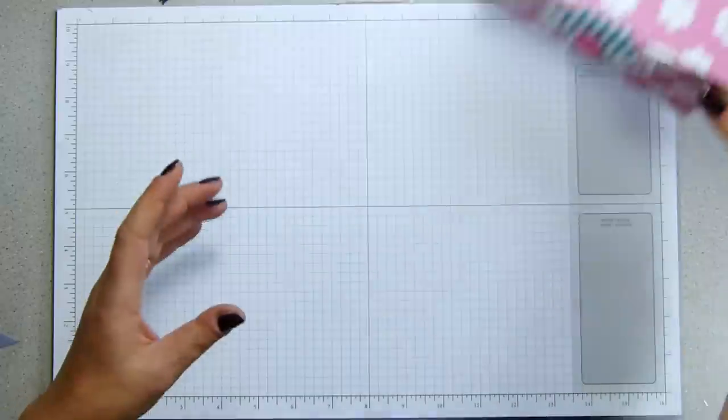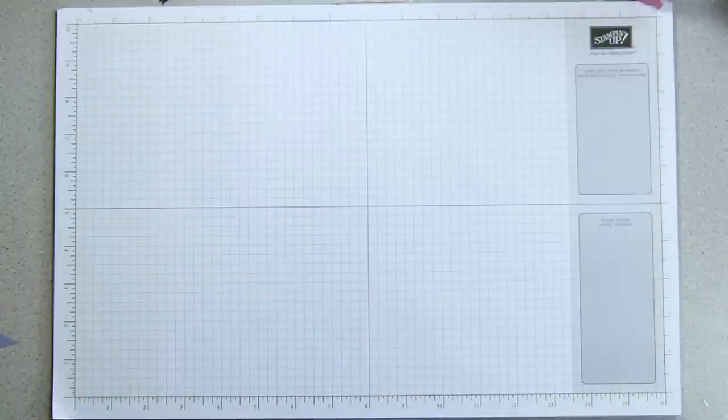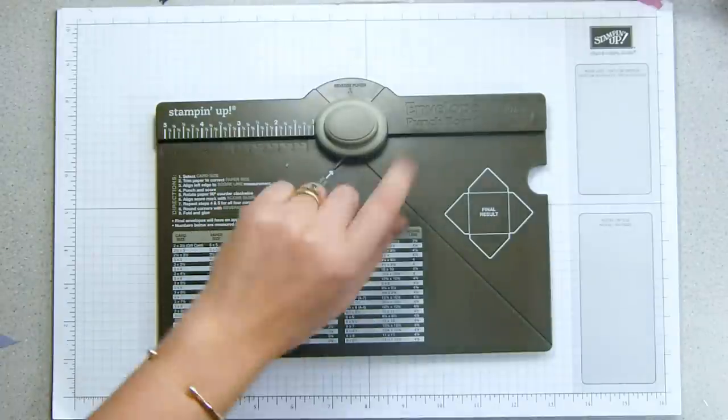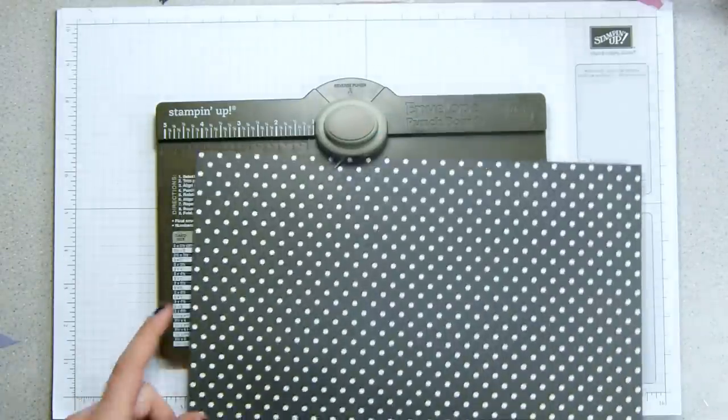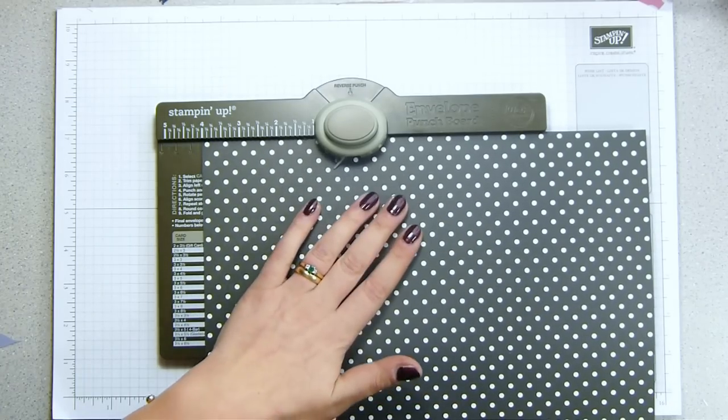I'm going to pop it right out of the way for the moment because it uses a piece of 12x12 designer series paper. The first one I made with Gingham Garden. The one I'm going to make now, I'm going to use Modern Medley, which is the lovely black and vanilla color.